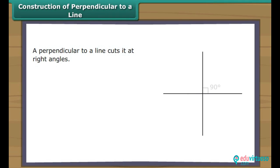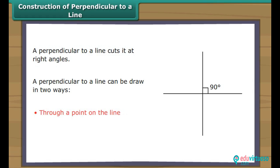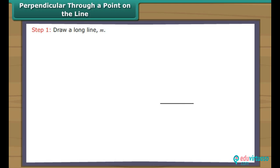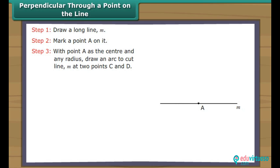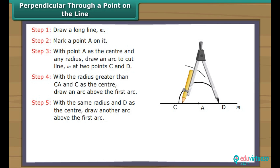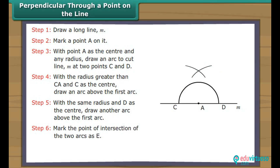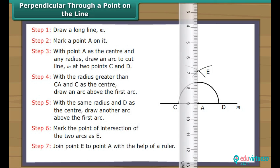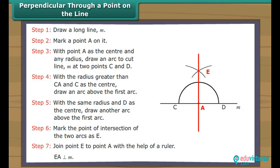Construction of perpendicular to a line. A perpendicular to a line cuts it at right angles. A perpendicular to a line can be drawn in two ways: through a point on the line, or through a point outside the line. Perpendicular through a point on the line: Draw a long line M and mark a point A on it. With point A as the centre and any radius, draw an arc to cut line M at two points C and D. With a radius greater than CA and C as the centre, draw an arc above. With the same radius and D as the centre, draw another arc above. Mark their intersection as E. Join E to A. EA is perpendicular to line M.